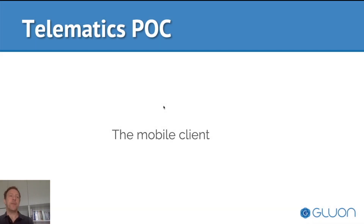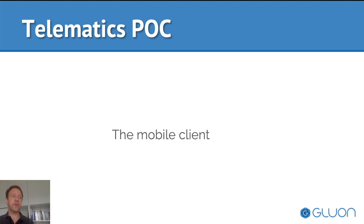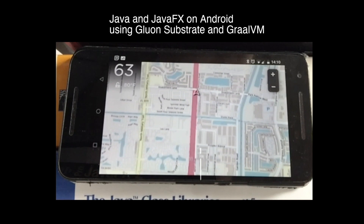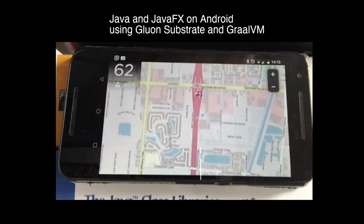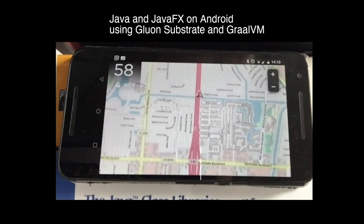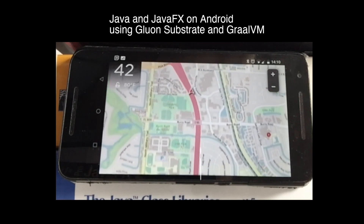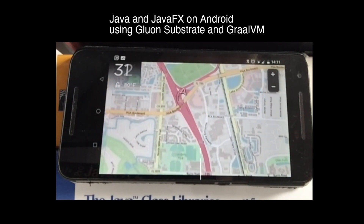That is the embedded demo, and we will talk more about embedded in a later update. But because this is JavaFX, the same application also runs on mobile devices. We can have a look at how the same application runs on an Android phone. This is a Nexus 5 phone where the same application — at least the map part — is running. You can see that the quality of the application is pretty good.